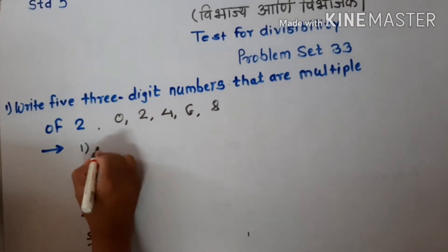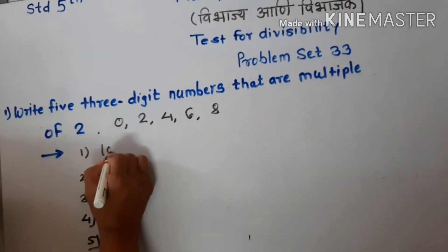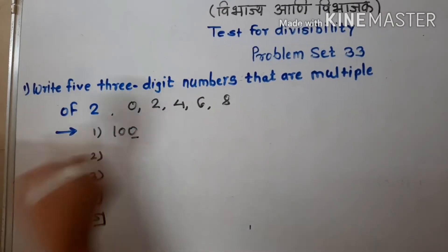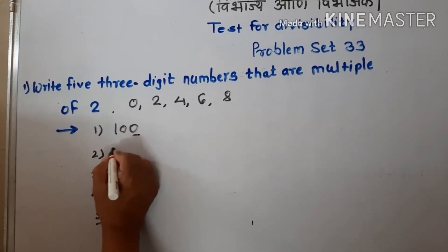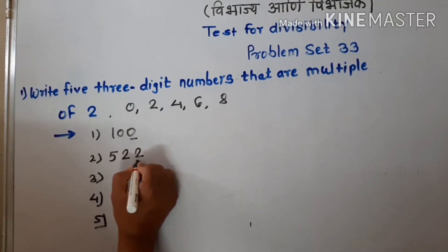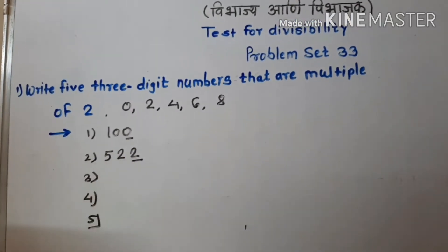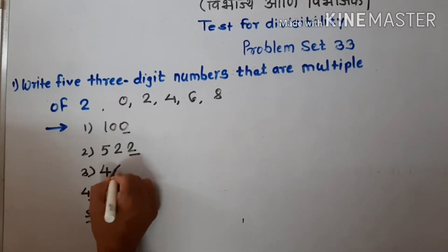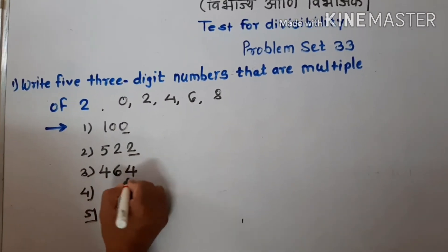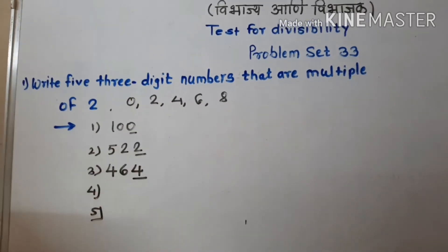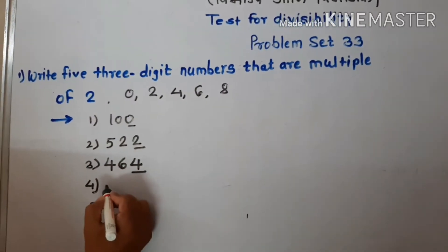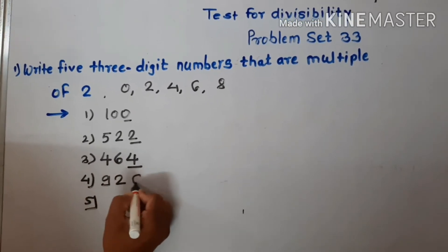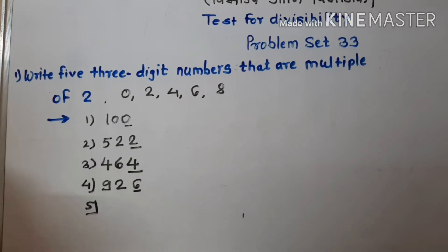We need to write 5 three-digit numbers. The first number we take is 100 — its unit place has 0. The second number is 122 — unit place has 2. The third number is 464 — unit place has 4.